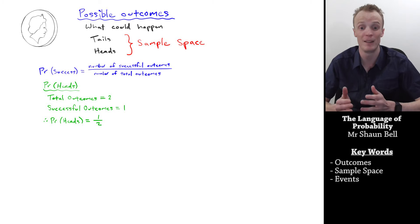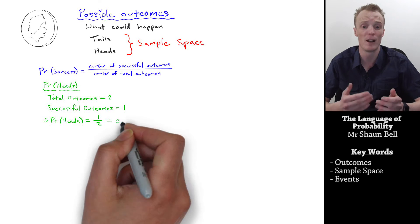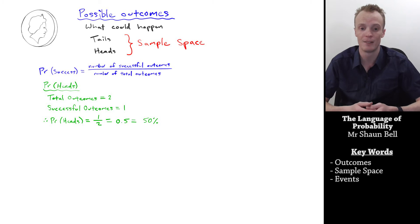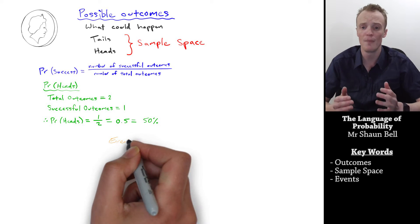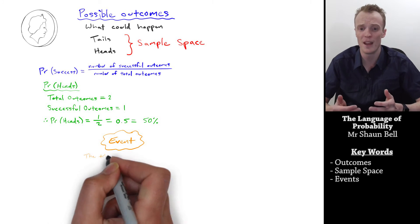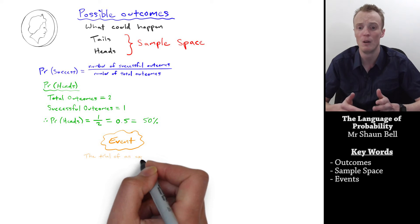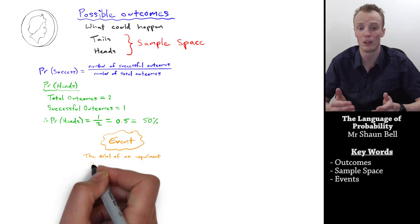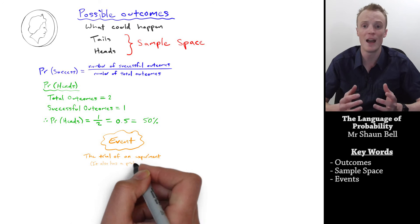We've described this probability as a fraction, but we can actually describe it as a decimal by converting, which would be 0.5, or as a percentage, which would be 50%. Now if I were to go ahead and flip this coin, we would describe the outcome that has occurred as an event. So we call something an event when we perform a trial of whatever it is we're trying to do — in this case, flipping the coin — and that event will have an outcome.